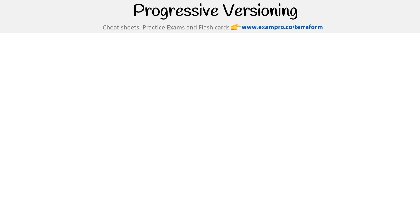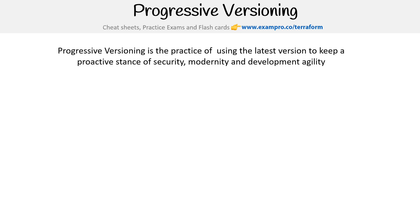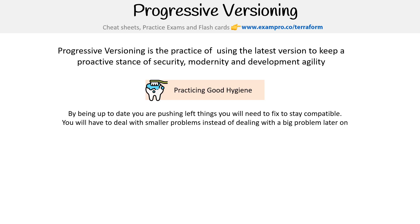Progressive versioning is the practice of using the latest version to keep a proactive stance of security, modernity, and development agility. We like to describe this as practicing good hygiene when working with your code. By being up to date, you're always pushing left on things that need to stay fixed or compatible, and you'll deal with smaller problems instead of a big problem later on.